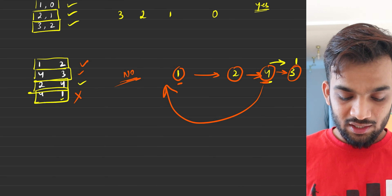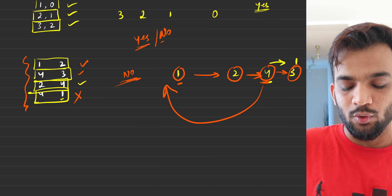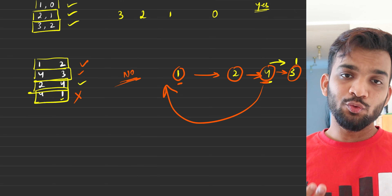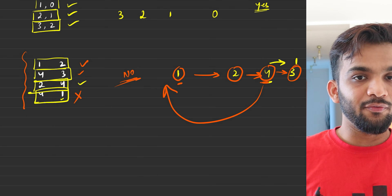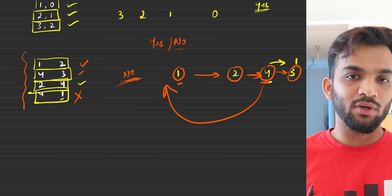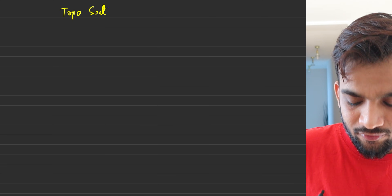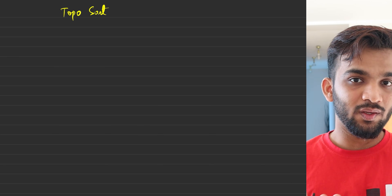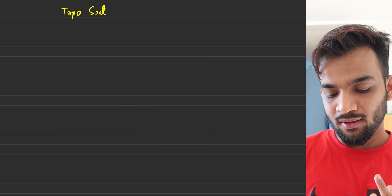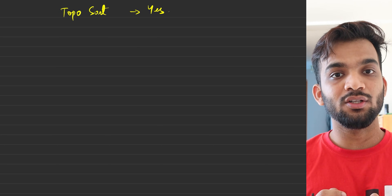So this is what we have to figure out: given a pair of tasks, return yes if you can perform all tasks and no if you can't. Which algorithm to use? We can definitely use topological sort, which you learned in the previous video. The reason is straightforward — if you remember the definition of topological sort, it applies perfectly here.